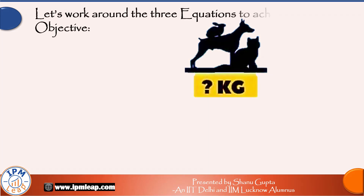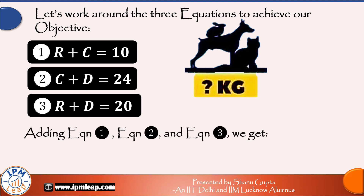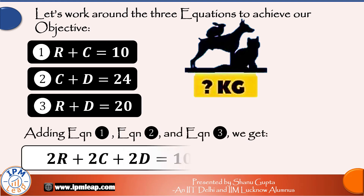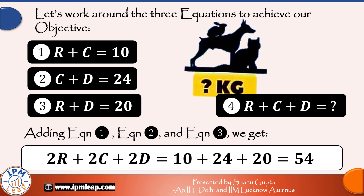So quick summary — we have three equations in three variables now. So very likely we have a unique solution. The simplest trick to solve this puzzle would be to add these three equations. Doing that, we get 2R plus 2C plus 2D is equal to 10 plus 24 plus 20, which is equal to 54. Dividing by two on both sides, we get R plus C plus D is equal to 27.